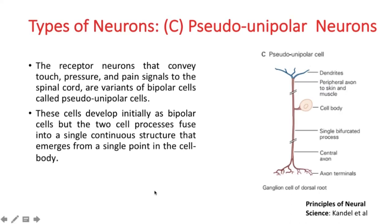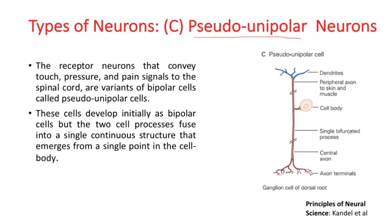If you look at more complicated neurons, there are some which are not exactly bipolar — they initially start with a bipolar configuration, but we call them pseudo-unipolar. In the pseudo-unipolar system, there is a peripheral axon and a central axon going to the axon terminals, but both are joined to the cell body through a single process — that is why it is called pseudo-unipolar. These cells develop initially as bipolar cells, but the two cell processes fuse into a single continuous structure that emerges from a single point in the cell body.